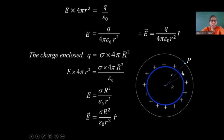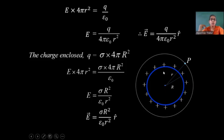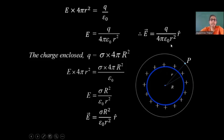Notice that this result behaves as if the whole charge is concentrated at the center. The electric field we have obtained is the same as the field due to a point charge. So it behaves as if the whole charge is concentrated at the center and is in the radial direction. For positive charges it goes away from the sphere, and for negative charges it would be directed inwards. We have now found the electric field at a point outside the thinly charged spherical shell.